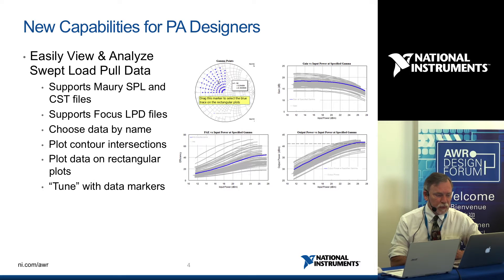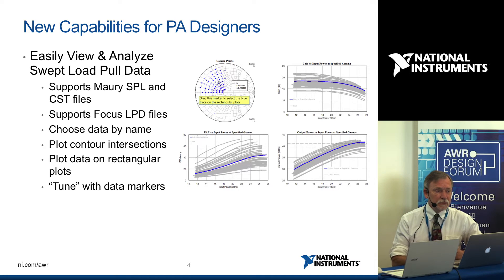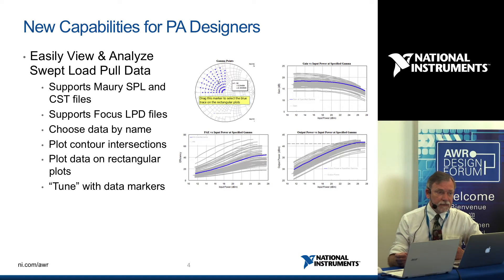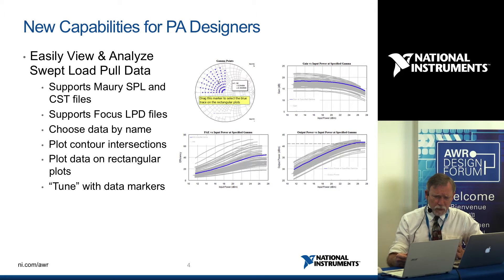Moving on to the load pull, we've at last supported swept power — this is the biggest change we've made. So we can have multiple gammas, multiple powers, and indeed multiple parameters associated with these sweeps. With those extra degrees of freedom comes more complex measurements to capture and display this data in convenient form for engineers to analyse what's going on in the PA structures. Simultaneously, we've added support for the Maury SPL and CST file formats and the focus load pull.